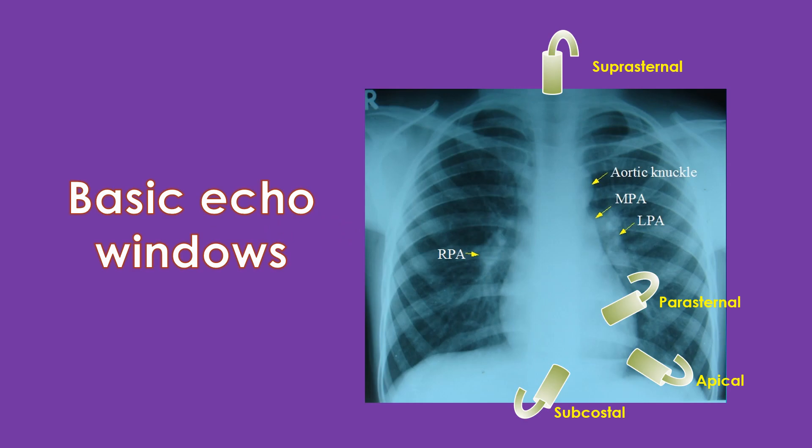In chronic obstructive lung disease, when parasternal and apical windows are poor, the subcostal window is usually good. The usual echo windows are the parasternal, apical, subcostal, and suprasternal. Each window allows the imaging of certain cardiac structures. Lungs do not come in the way of the ultrasound beam in the subcostal view. Air in the lungs does not permit transmission of the ultrasound beam to the heart, so echocardiographic windows are regions where overlap by the lungs is minimal.